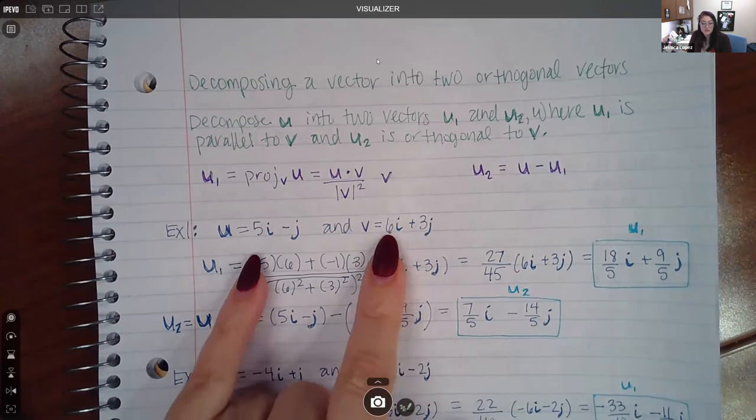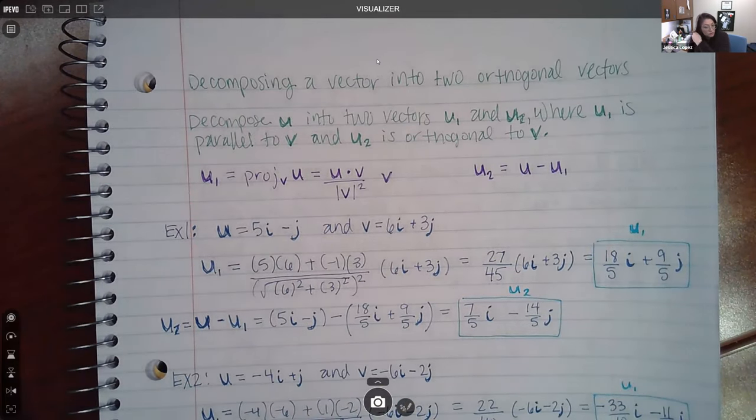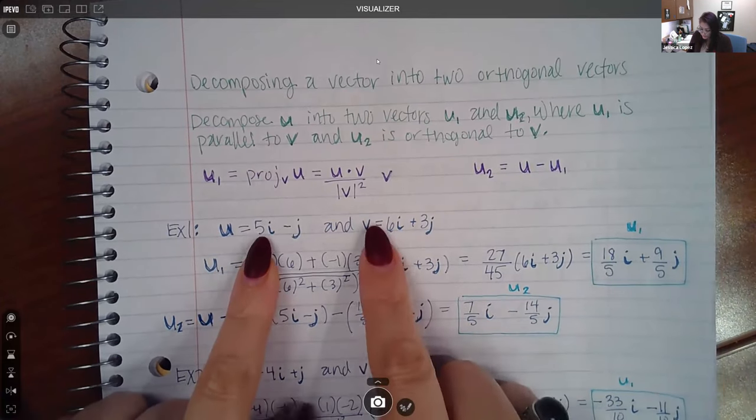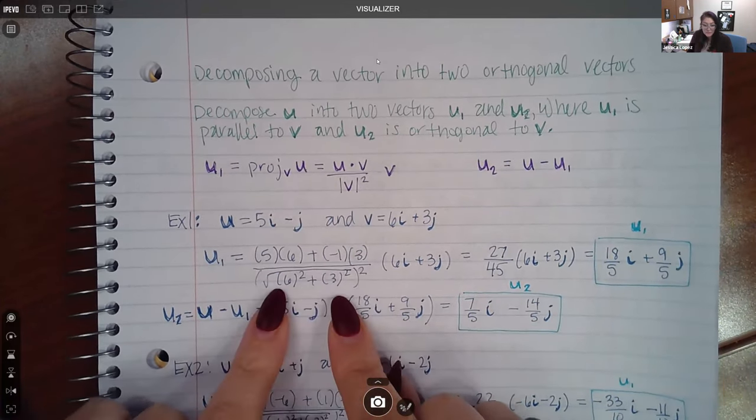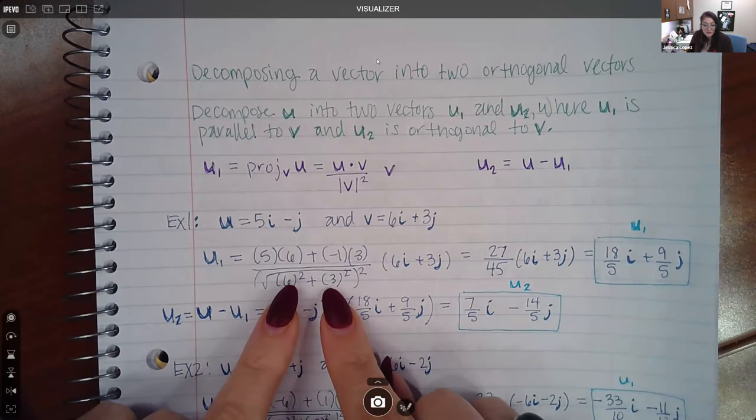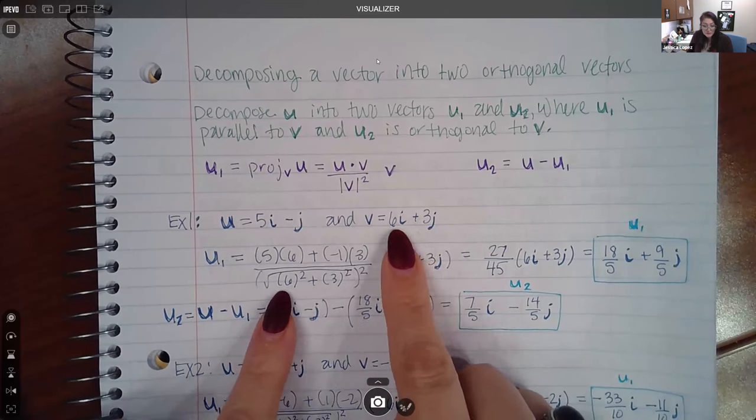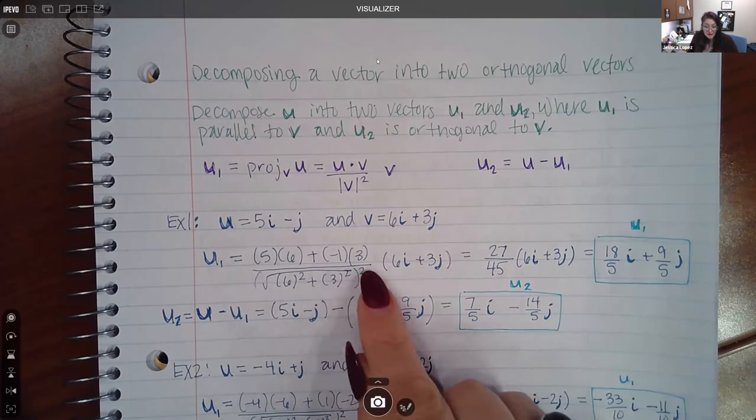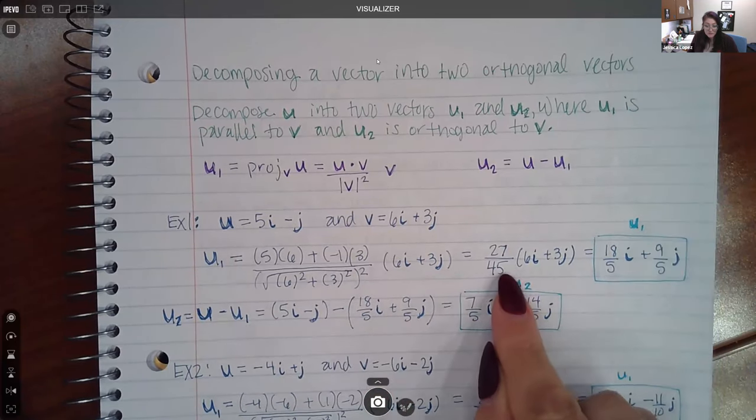So for example one, they gave us these two vectors and they asked us these directions up here. So the first thing we want to do was apply the formula for the projection. Now, what we're going to do is we're going to take the dot product. So 5 times 6 plus negative 1 times 3. And then at the bottom, we're taking only the magnitude of V squared. So it's the square root of 6 squared plus 3 squared, but the result will get squared. So essentially, this will cancel out. So you have 36 plus 9, which resulted in 45.